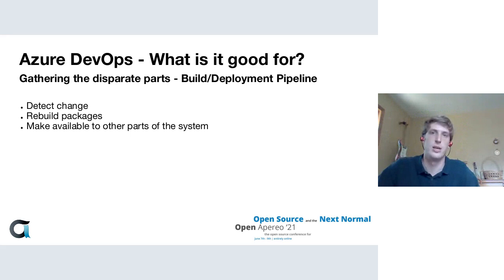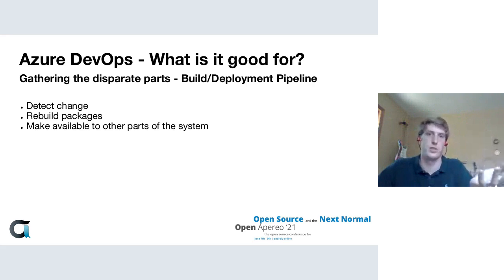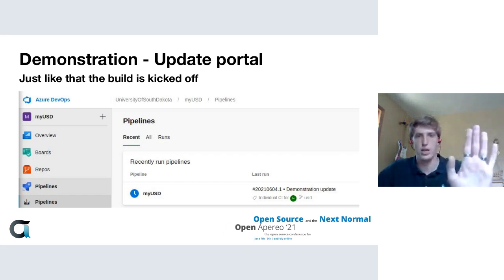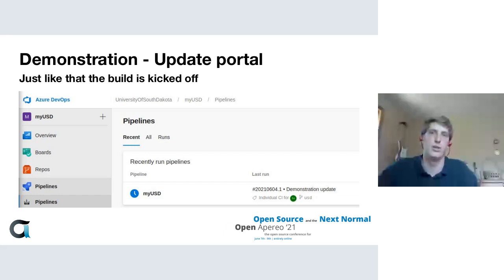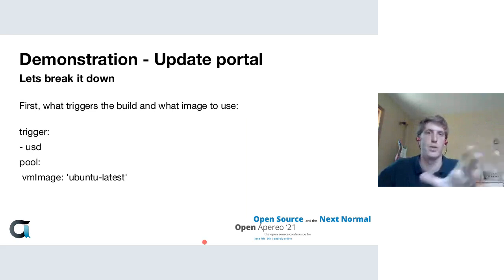Lastly, there's the build pipeline part, which is what I'm going to spend most of this talk on. It detects when changes have been made, rebuilds the packages, and makes them available for other parts of the system to do releases and other builds. Here's a quick glance at the tiny change I'm going to make — just changing the version of one of our portlets, then committing and pushing that change, and just like that, it starts a build automatically. I'll step into each part separately.